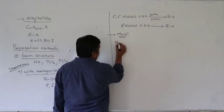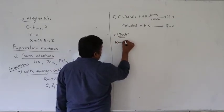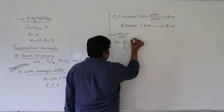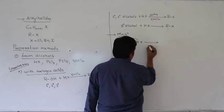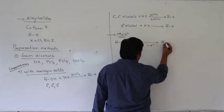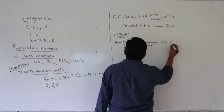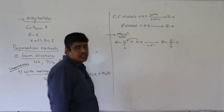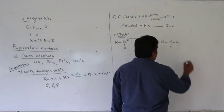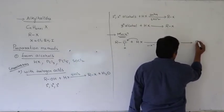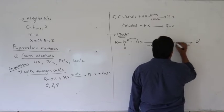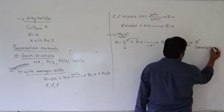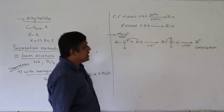In the general mechanism, the alcohol oxygen acts as a lone pair donor and reacts with HX. So protonation takes place, and this results in removal of water. What we get is a carbocation. So the reaction proceeds with the formation of a carbocation.